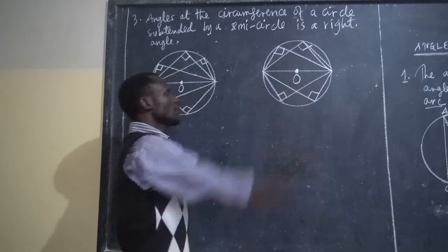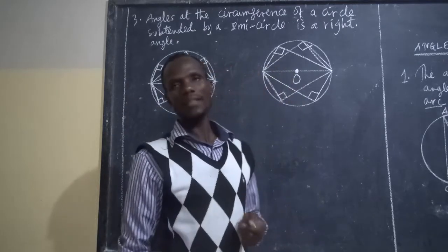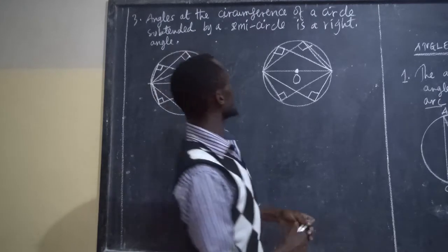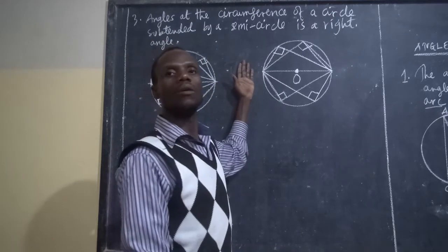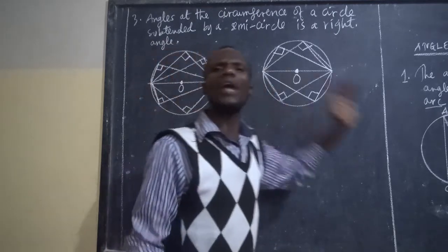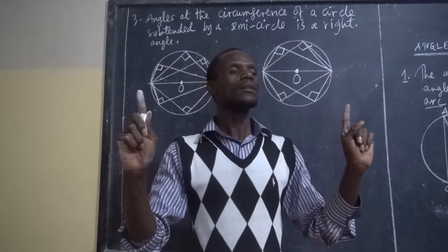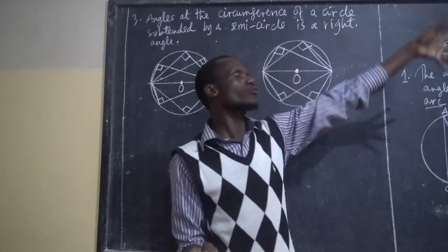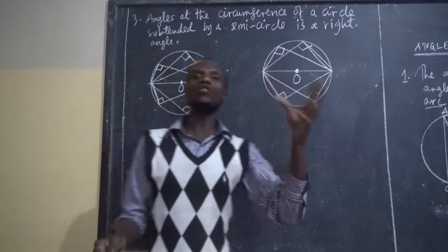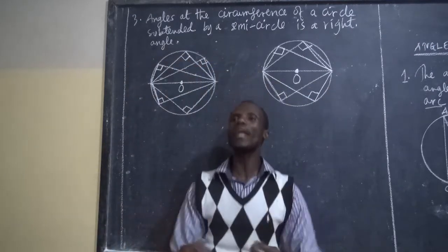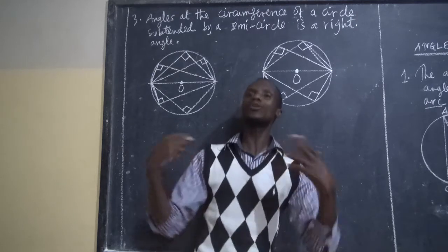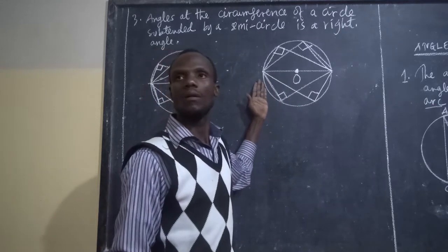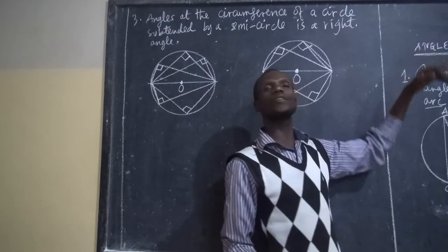The angle formed is called a right angle. Why is it called a right angle? Because it has a value of 90 degrees. That is the third property of angles in a circle. You may start from this point or that point — we don't care — but what matters is they can be used in solving questions. To solve the problem, you need to understand the principles. These are very important things to learn about circles.